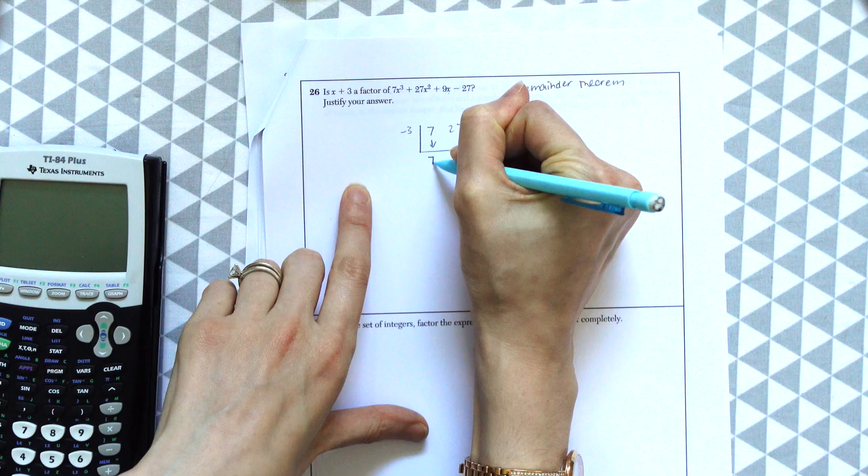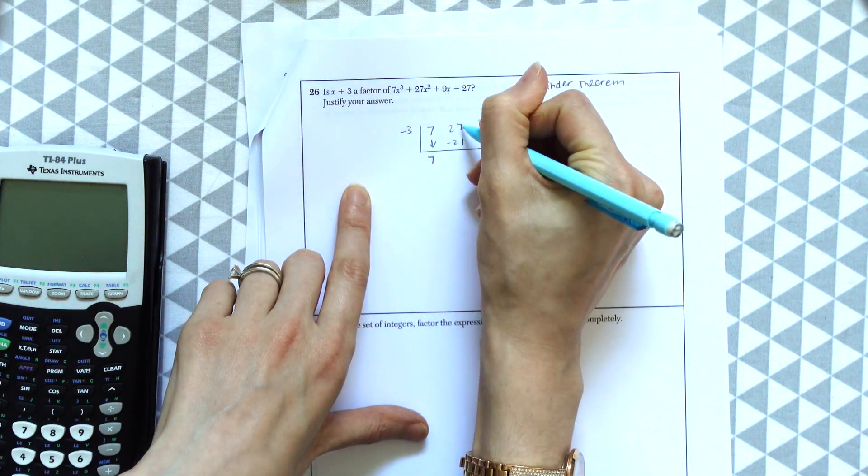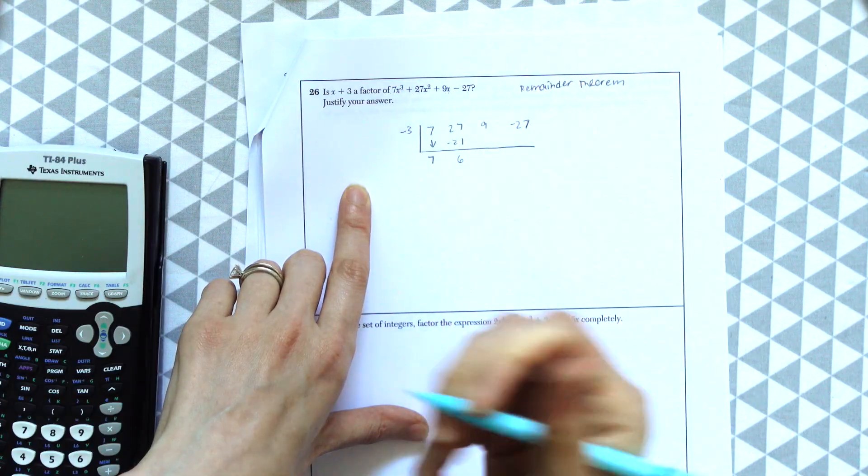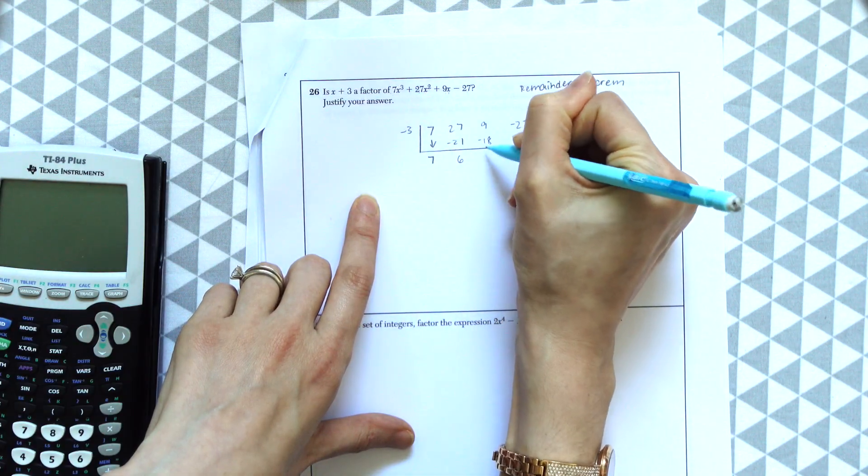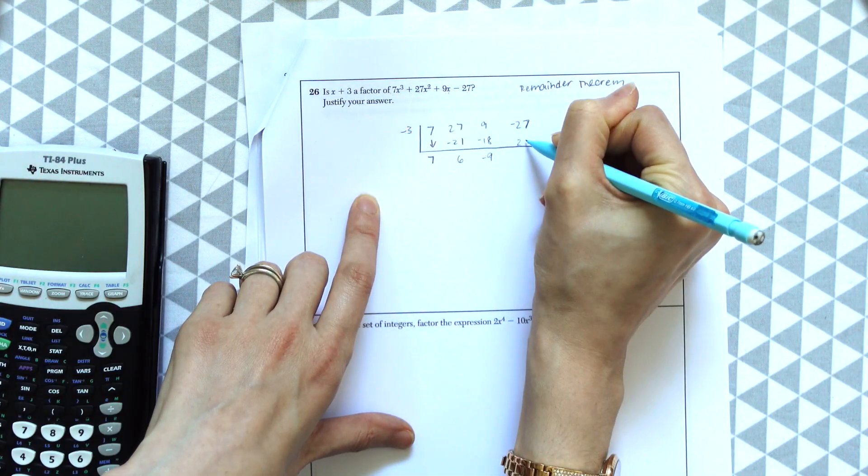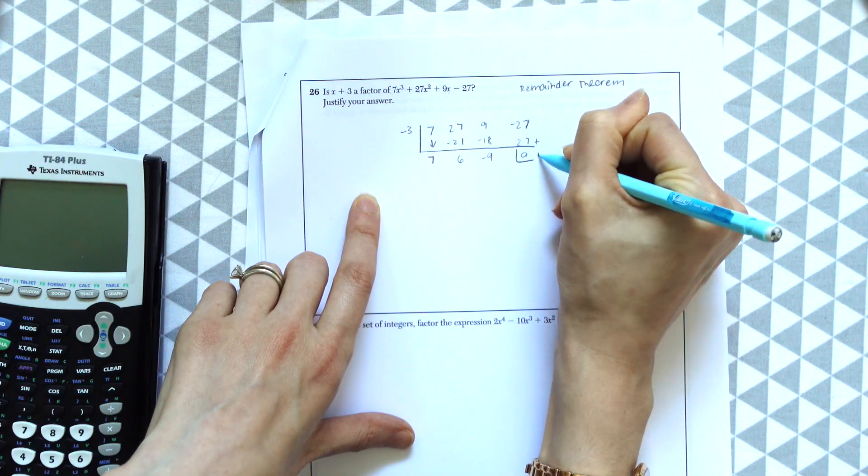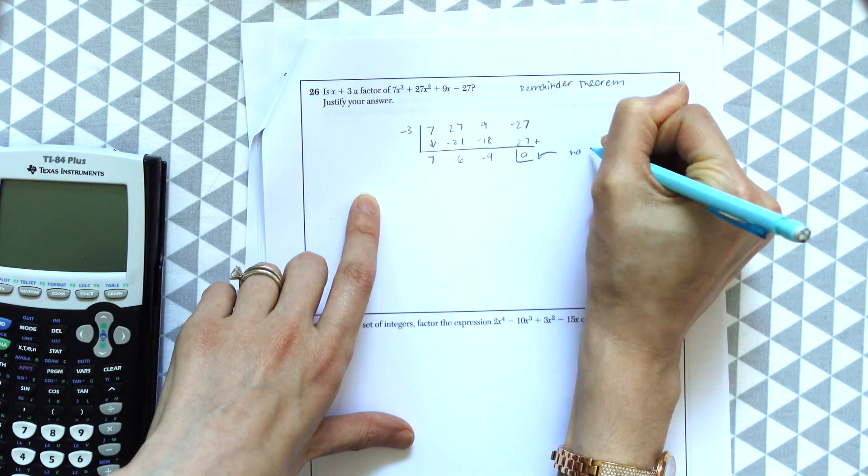Now we're just going to do synthetic division. We're going to bring this down, which is 7. 7 times negative 3 is negative 21. Then we're going to add these together, which gives us 6. We're going to keep this pattern going: multiply and then add. Multiply and then add.